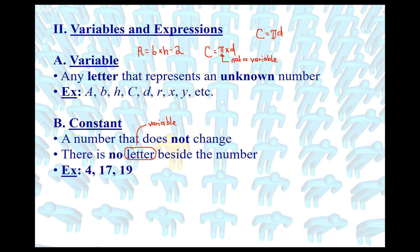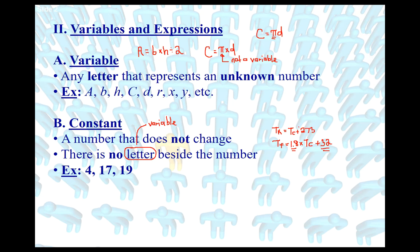Some examples of constants might be 4, 17, or 19. An equation that would have a constant in it comes from the heat and temperature unit: Fahrenheit temperature equals 1.8 times your temperature in Celsius plus 32. This 32, because it's separated by a plus sign, is a constant. The 1.8, because it's attached to the temperature in Celsius by multiplication, would not be a constant.